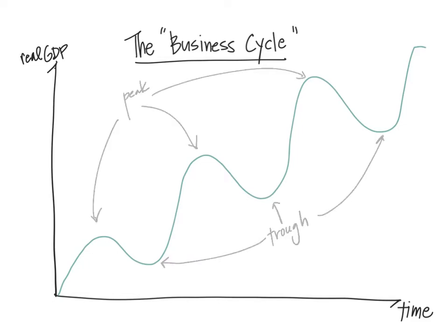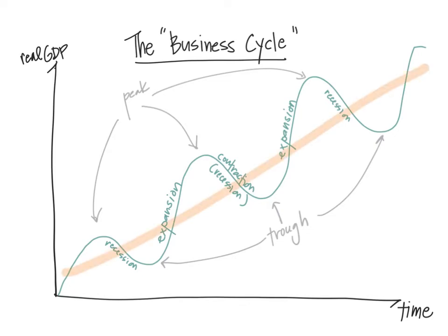The tops of the business cycle are called peaks, and the bottoms are called troughs. When real GDP is expanding, it's called an expansion. When it's contracting, it's called a recession. What would be ideal is to avoid the ups and downs altogether — steady, long-run growth is the goal.